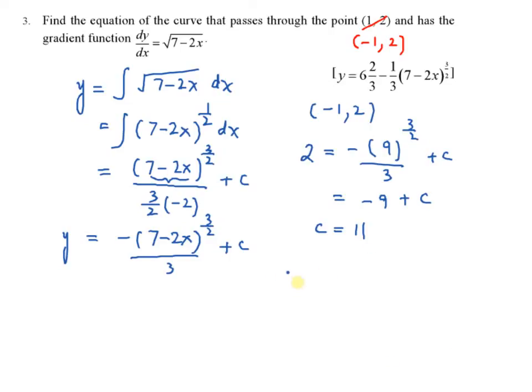Therefore, your final answer, y equal to negative 7 minus 2x power 3 over 2 over 3 plus 11. So this is your final answer. So look at here, your answer here. This is the wrong answer. So the correct answer is y equal to negative 7 minus 2x power 3 over 2 over 3 plus 11.